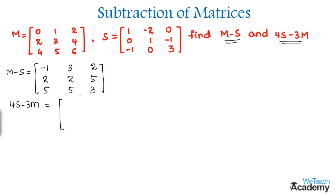So by multiplying we get 4 into 1 which is 4 and then 4 into minus 2 is minus 8 and then 4 into 0 is 0. And in the next row by multiplying 4 we get the elements in the form of 0, 4 and minus 4. And the next row would be 4 into minus 1 which is minus 4, 0 and 4 into 3 which is 12.